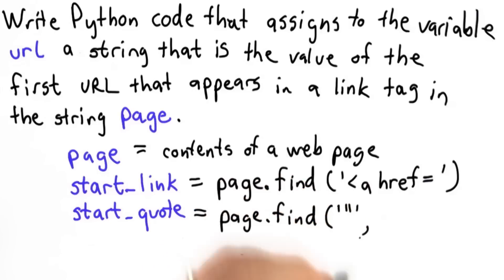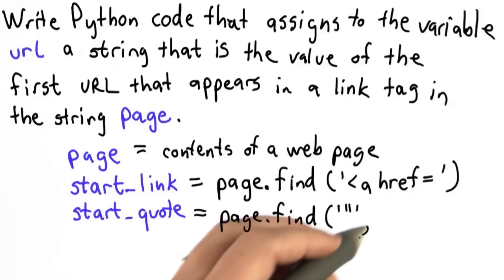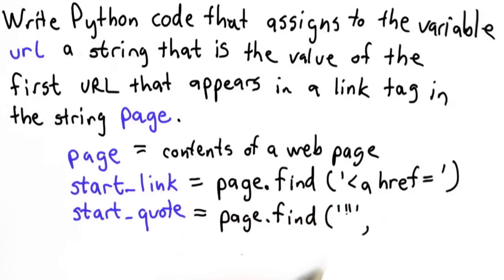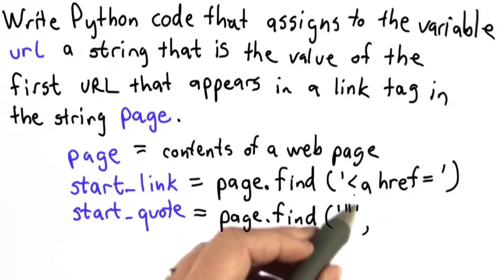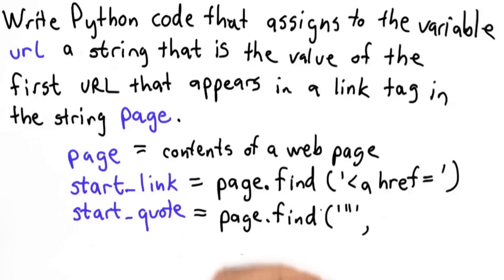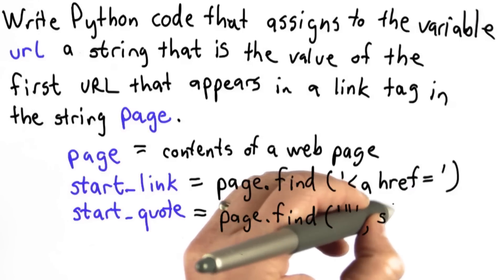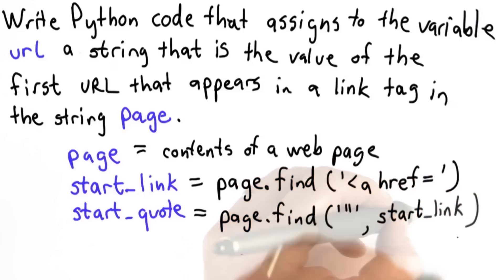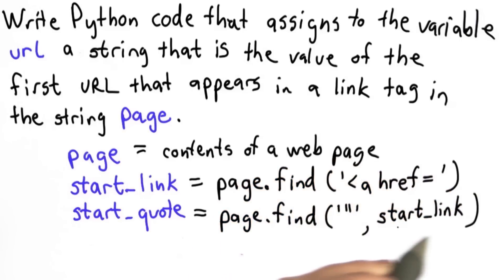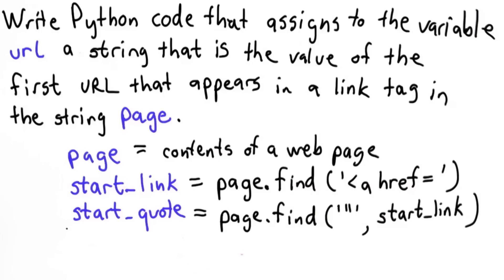We also need to pass in a second parameter. We don't want to find the first double quote in the page, because that might not be part of a link. So we also need to pass in the variable start_link, so that makes find start from the position of start_link, look for the double quote, and it will return the location where that start_quote appears.